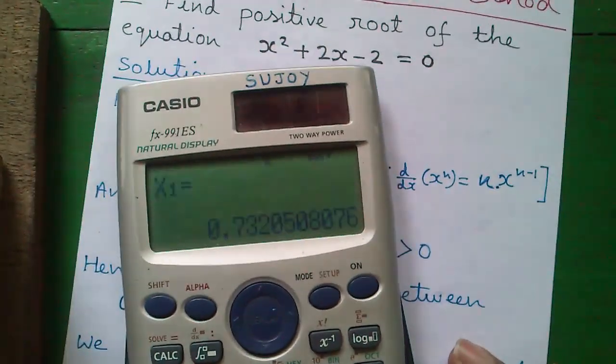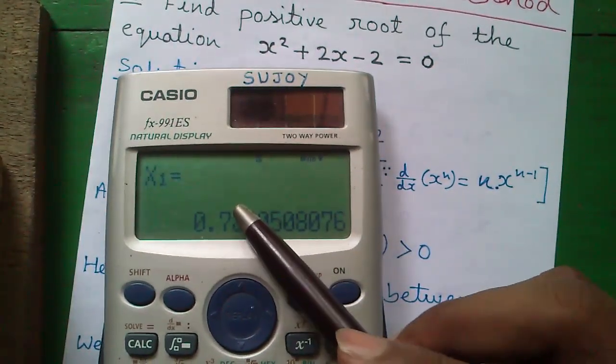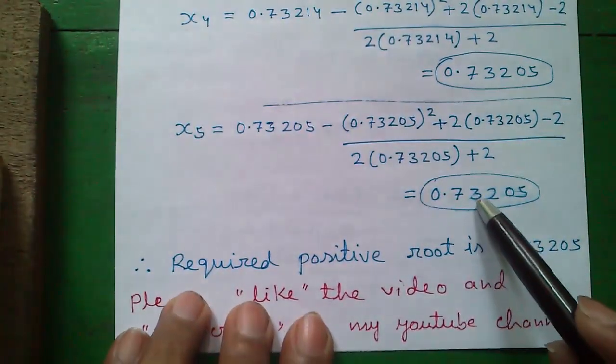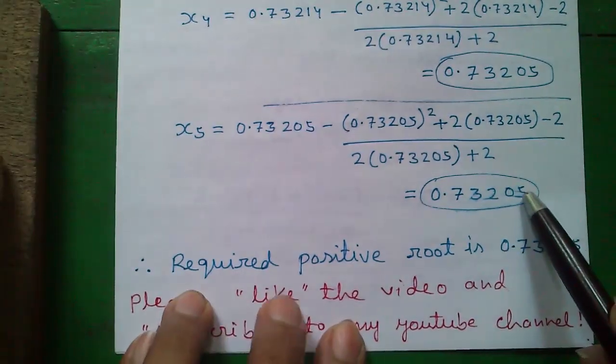So 1x square, press 1, plus 2x, plus 2, minus 2 and press equals to button. So it will give you the first root, that is the positive root, that is 0.73205, which is also obtained by Newton-Raphson method.